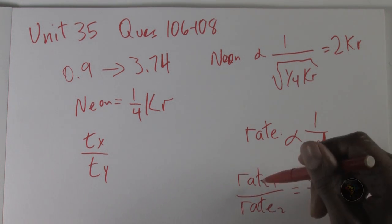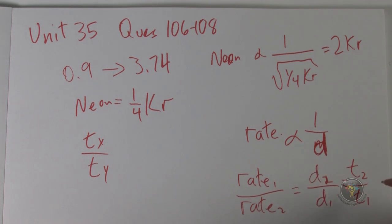So the time would be t2 over t1, which is the opposite of the rate because the rate is the inverse of the time. It is per time.